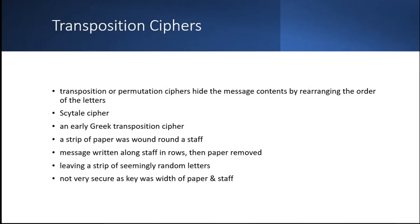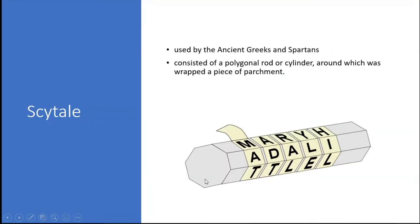The Scytale cipher is one of the examples, an early Greek transposition cipher. What happened in that? A strip of paper was wound around a staff. It can be a pencil, wooden rod, or anything. A message was written on the staff in rows, then the paper was removed and it leaves a strip of seemingly random letters. I will show you the image of how it happens.